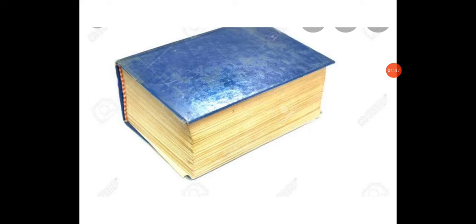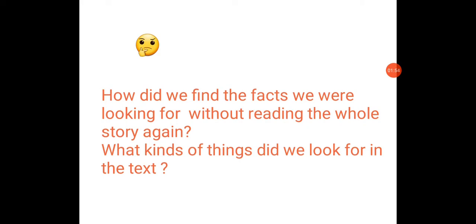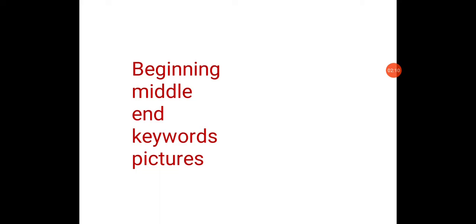So students, can you tell me how did we find out the facts we were looking for without reading the whole story? Since we have already read the story once, we have an idea of what events happened when. So we just need to scan only the beginning, middle, or ending part for the answer. We also looked at the keywords and pictures for clues.